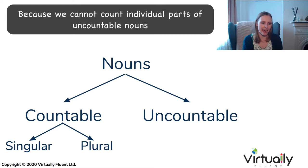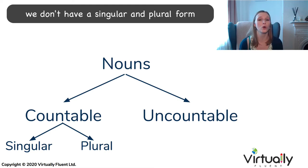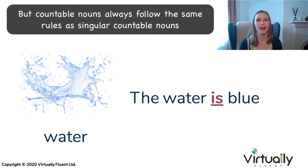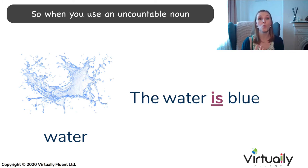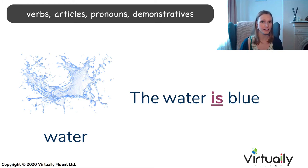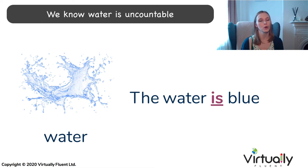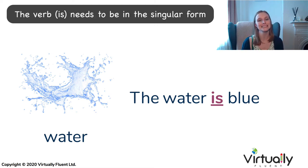Because we cannot count individual parts of uncountable nouns, we don't have a singular and plural form — we only have one form, one word. But uncountable nouns always follow the same rules as singular countable nouns. So when you use an uncountable noun, verbs, articles, pronouns and demonstratives will all be in the singular form. For example, 'the water is blue.' We know water is uncountable, so the verb 'is' needs to be in the singular form.